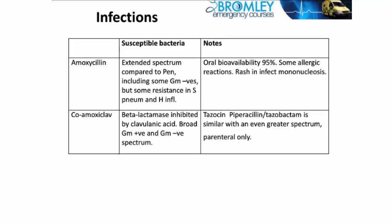Co-amoxiclav can be given intravenously, but tends to be mostly an oral agent. When we want something similar intravenously, the usual combination is called Tazosin, which is a combination of piperacillin — an extended spectrum penicillin — and tazobactam, which is very similar to clavulanic acid. That combination has a similar action to co-amoxiclav and is given parenterally by injection.